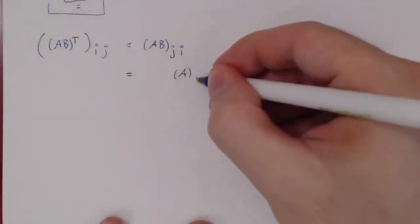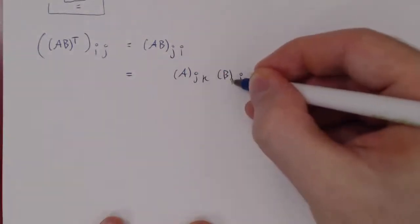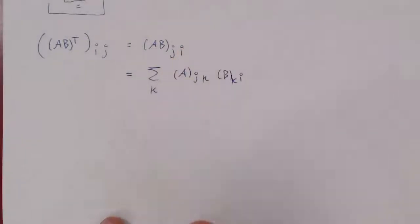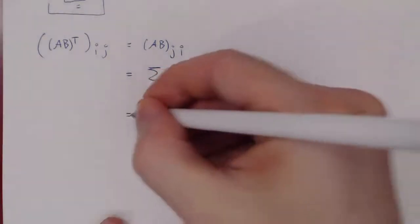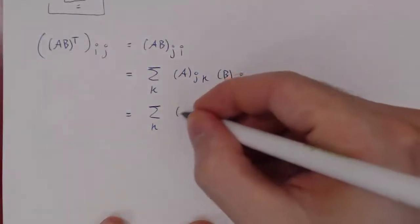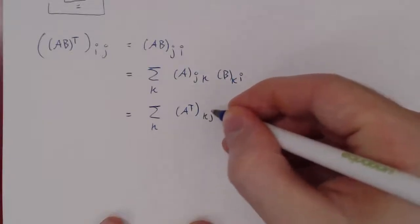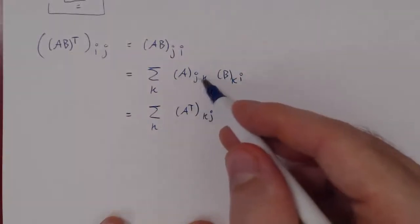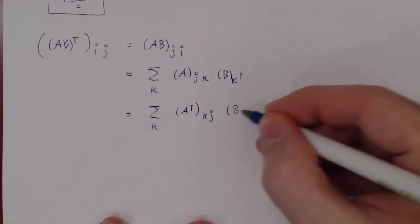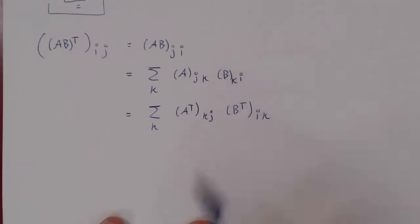We can now expand. We take the entries of A in the j-th row, the entries of B in the i-th column, multiply corresponding entries, and add them up. Now we want to conclude with B transposed A transposed, so we bring back the transposes on A and B. The entry of A transposed in the k-th row, j-th column is the entry of A in the j-th row, k-th column. And the entry of B transposed in the i-th row, k-th column is the entry of B in the k-th row, i-th column.